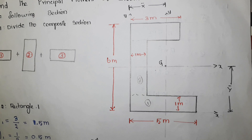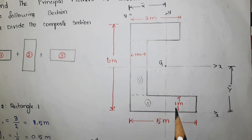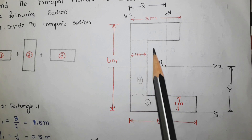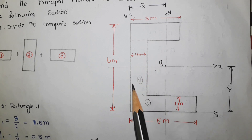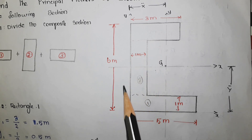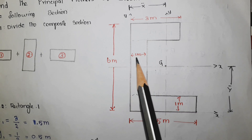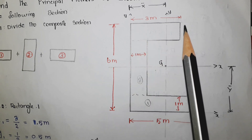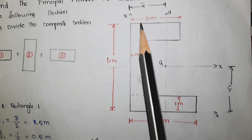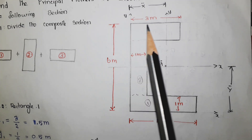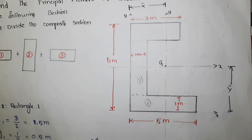The first step is to divide this composite section. Section 1 has 5 meter length and 1 meter height. Section 2 has a height of 6 minus 1 minus 1, so 4 meter, and a width of 1 meter. Section 3 has a thickness of 1 meter and width equal to 3 meter.